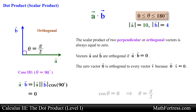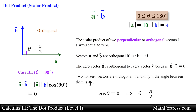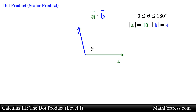Moreover, for any angle theta between 0 and pi, cosine of theta equals 0 if and only if theta equals pi over 2. So two nonzero vectors are orthogonal if and only if the angle between them is pi over 2. This fact will play a crucial role in later topics in this course.